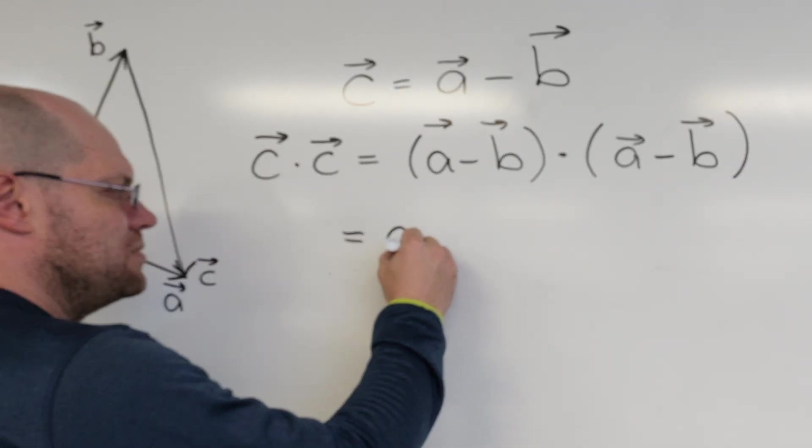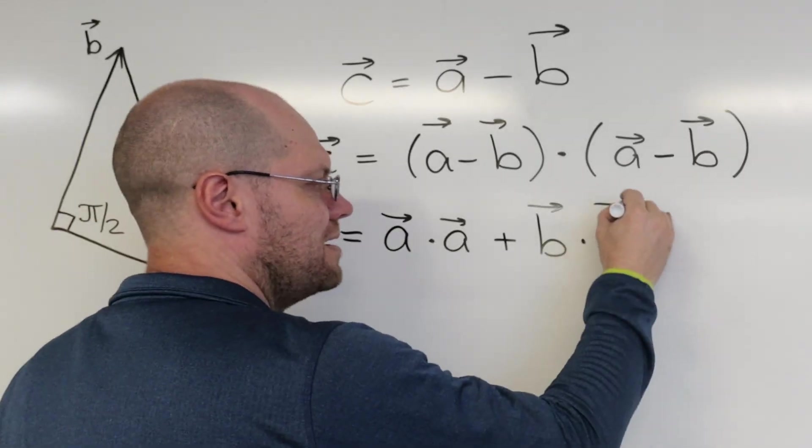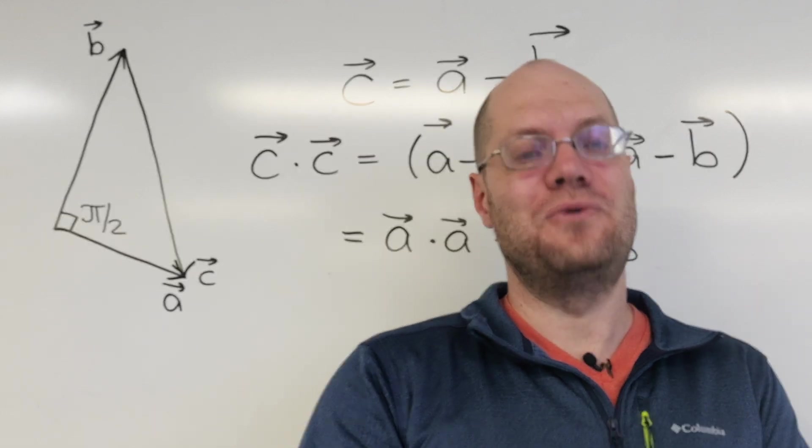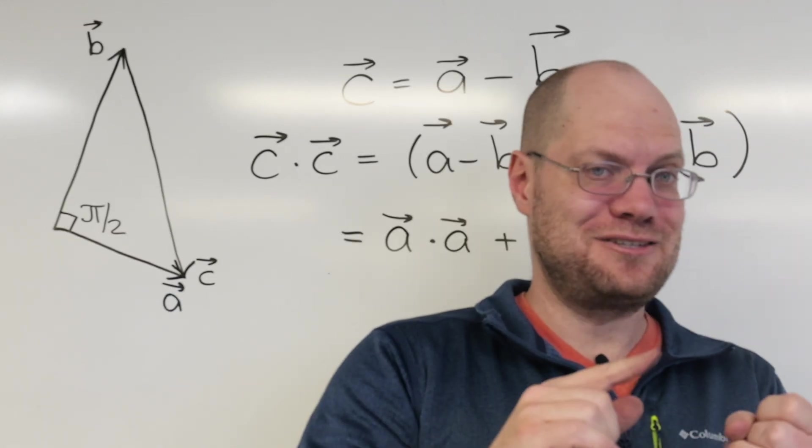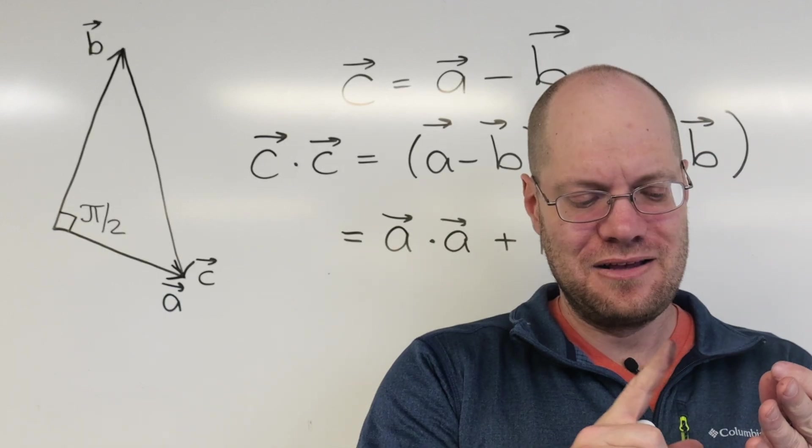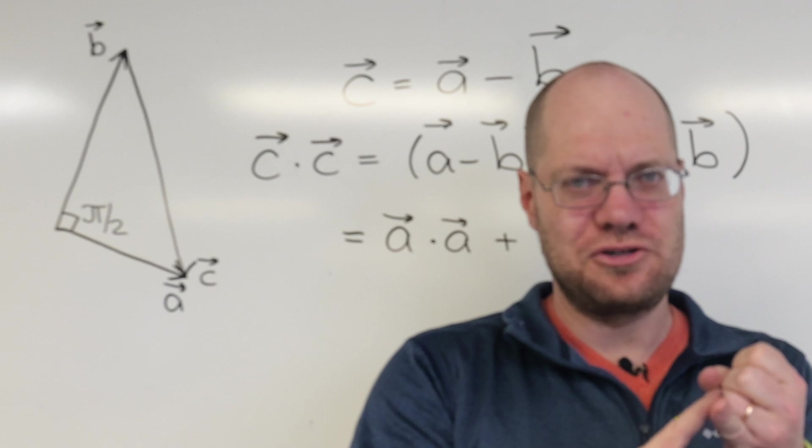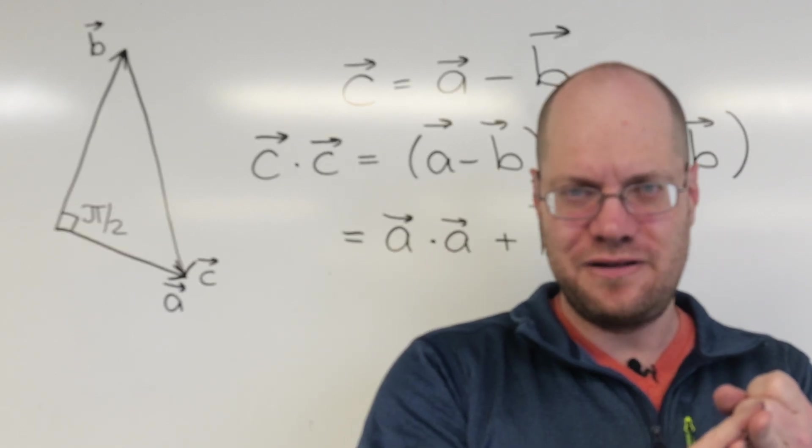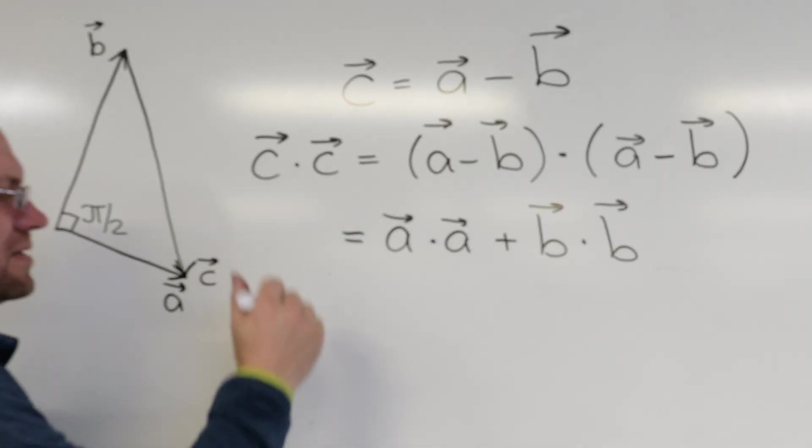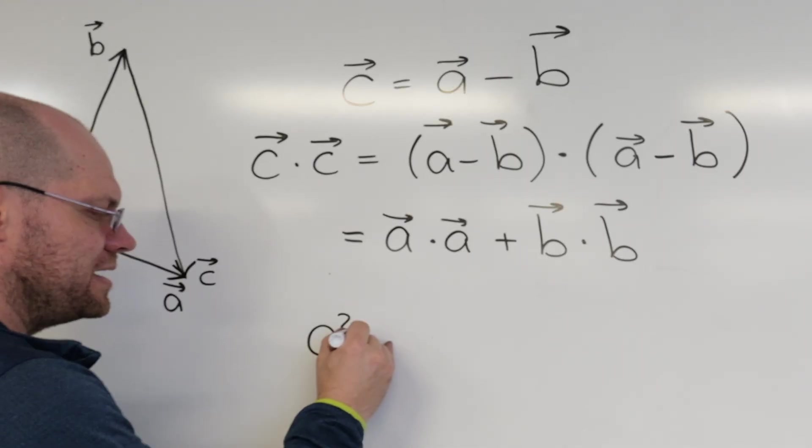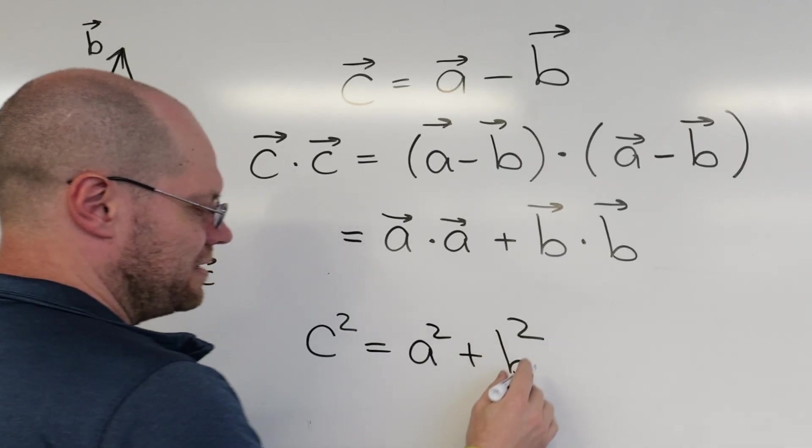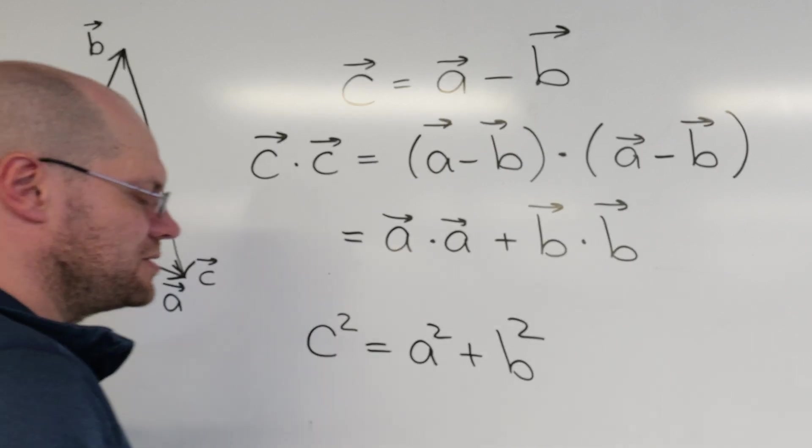And once again, appealing to the geometric definition of the dot product, where the dot product is the length of one vector times the length of the other vector, times the cosine of the angle between them. Right? We started with geometric quantities, we gave the definition, and now we conclude from all of that, that the dot product of a vector with itself is its length squared, equals the length of A squared, plus the length of B squared. And there we go. There you have Pythagoras' theorem.